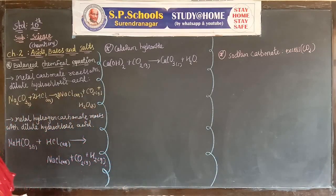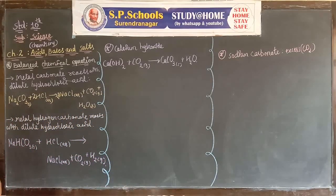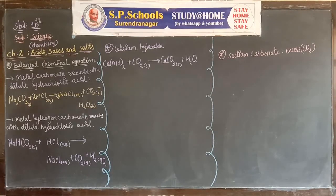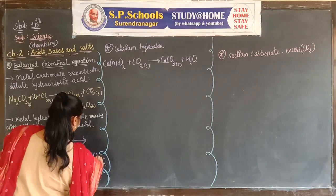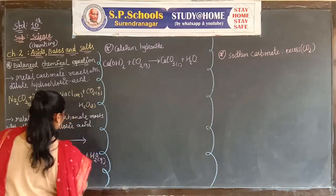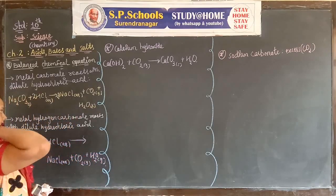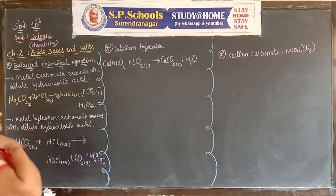When metal carbonate reacts with hydrochloric acid, and when metal bicarbonate reacts with hydrochloric acid, NaCl plus H2O plus CO2 will be formed. Here we put H2O.